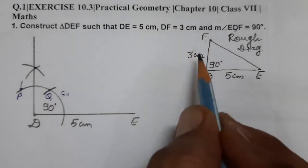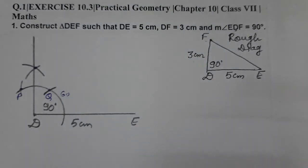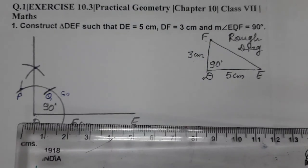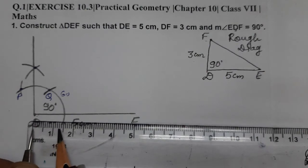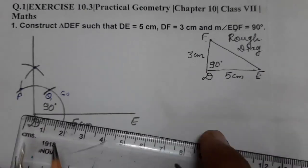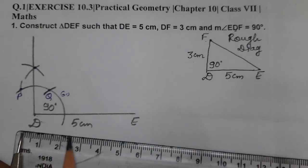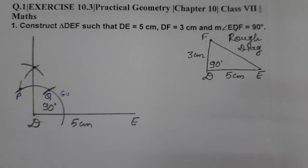Now D to F is 3 centimeters. So we will measure using ruler and compass 3 centimeters. Let's measure 3 centimeters. So this is 3 centimeters. Now put the pointer on D and cut the arc in this 90-degree angle.